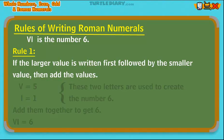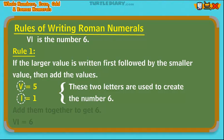Let's look at how we would write the number six. The Roman numeral for six is VI. V equals 5, I equals 1. V is the greater value and is written first. I follows the V because it has a smaller value than 5. Add them together to get 6. VI equals 6.